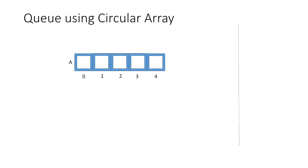Now suppose we take an array of size 5 to implement a queue. As initially the array is empty, both front and rear will have the value minus 1.